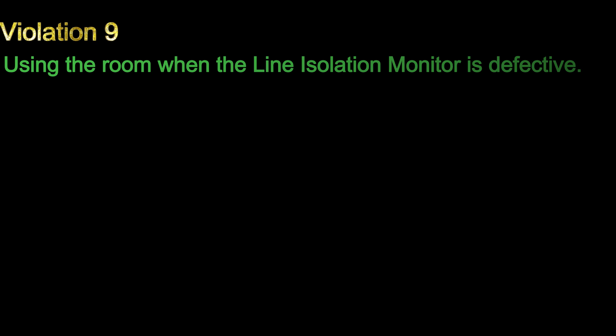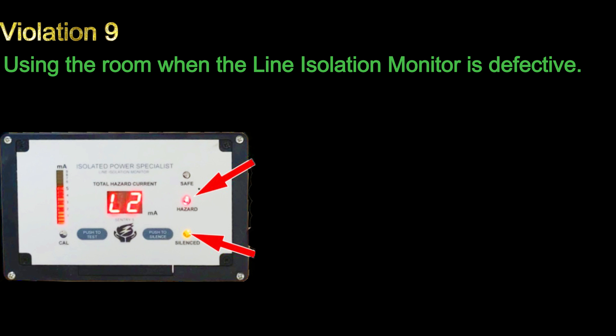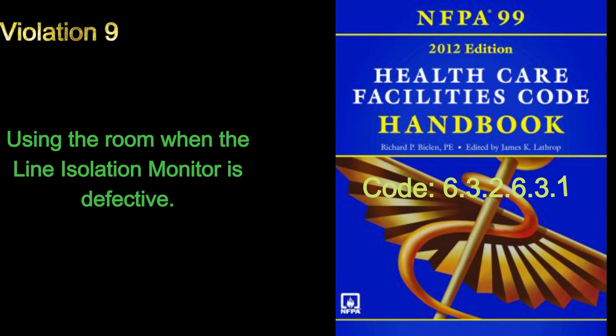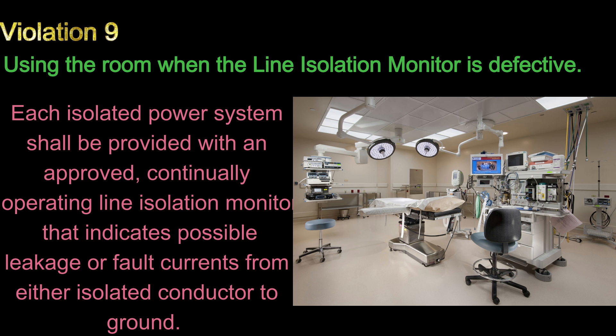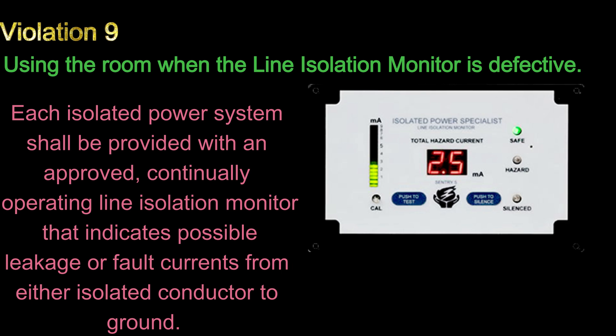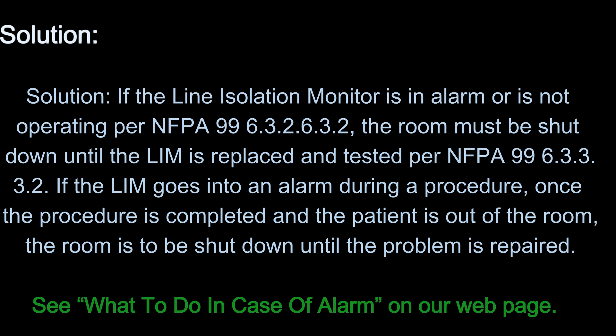Number 9: Using the room when the line isolation monitor is defective. Code 6.3.2.6.3.1 — each isolated power system shall be provided with an approved, continually operating line isolation monitor that indicates possible leakage or fault currents from either isolated conductor to ground. Solution: If the line isolation monitor is in alarm or is not operating per NFPA 99 6.3.2.6.3.2, the room must be shut down until the LIM is replaced and tested per NFPA 99 6.3.3.3.2. If the LIM goes into alarm during a procedure, once the procedure is completed and the patient is out of the room, the room is to be shut down until the problem is repaired.